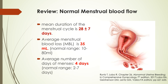Let us review the normal menstrual blood flow. The mean duration of the menstrual cycle is about 28 plus or minus 7 days, while the average menstrual blood loss, or MBL, is around 35 ml, with a normal range of 10 to 80 ml. The average number of days of menses is around 4 days, with a normal range of 2 to 7 days. Any deviation from these normal parameters is what we call AUB.